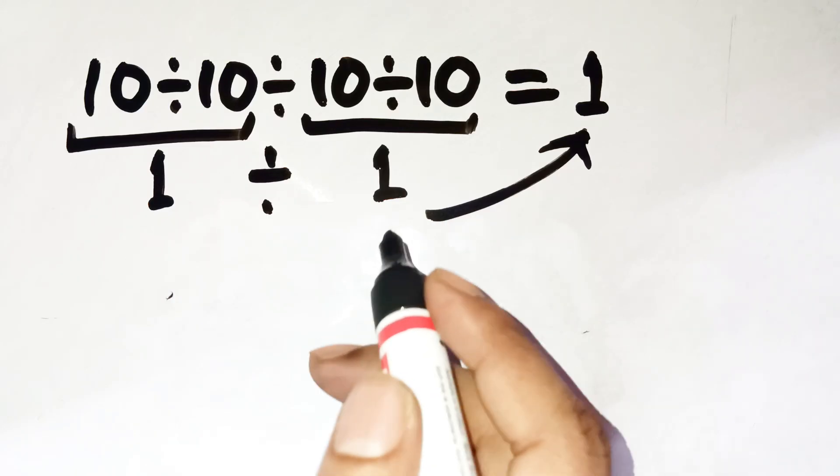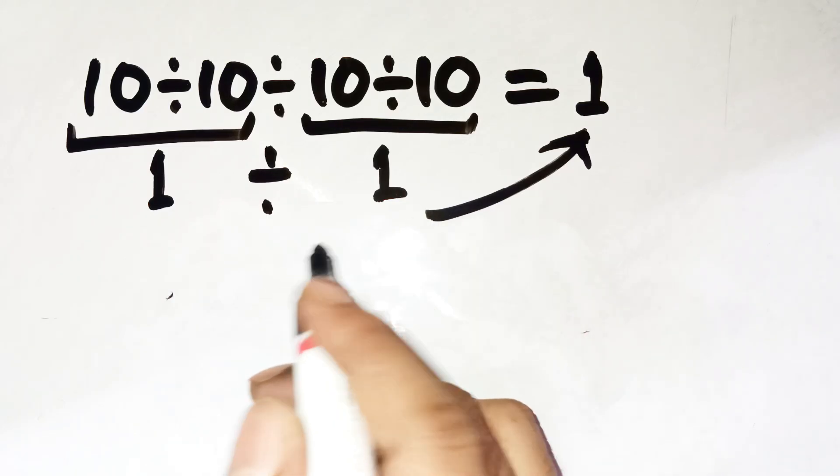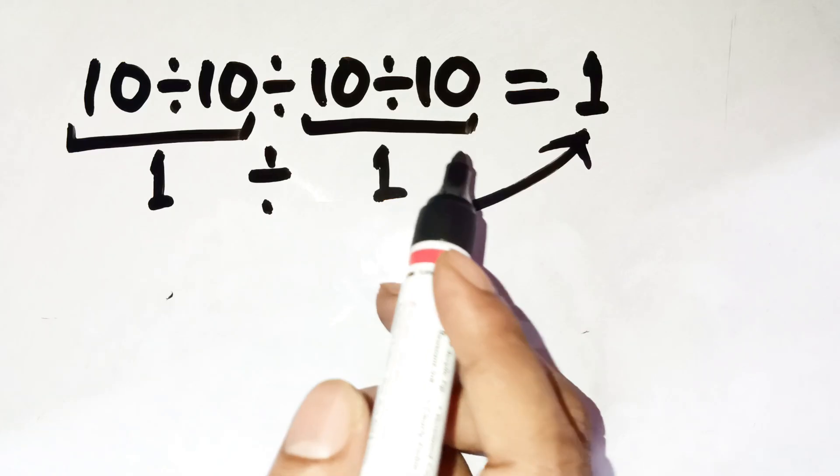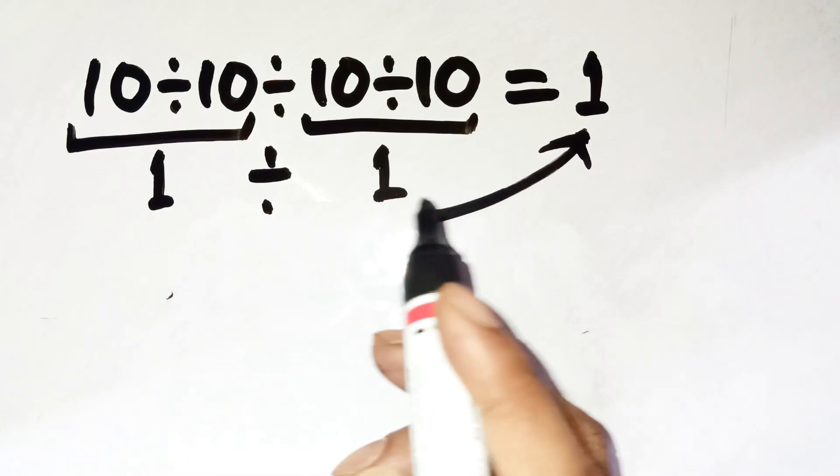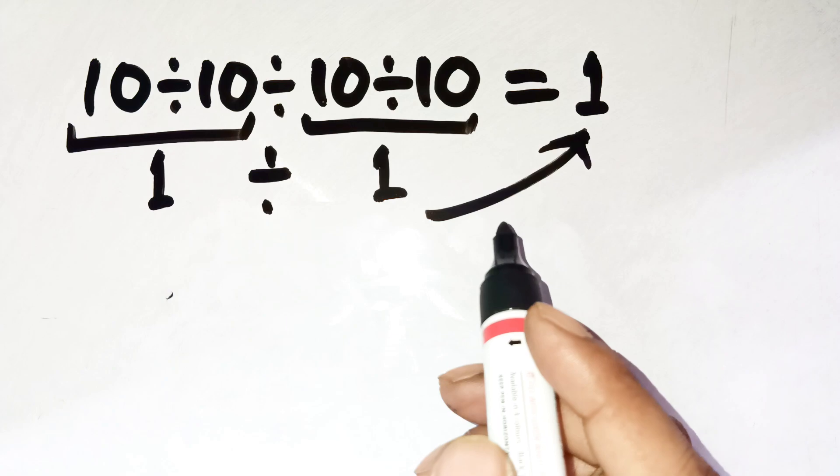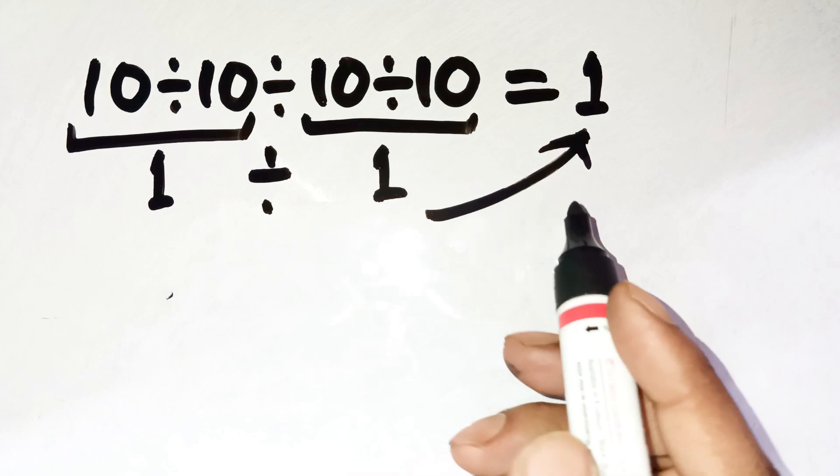Your brain tries to group the numbers however it wants, but division does not let you rearrange things like that. You can't just pair up left and right however you feel like. That's the mistake almost everyone makes.